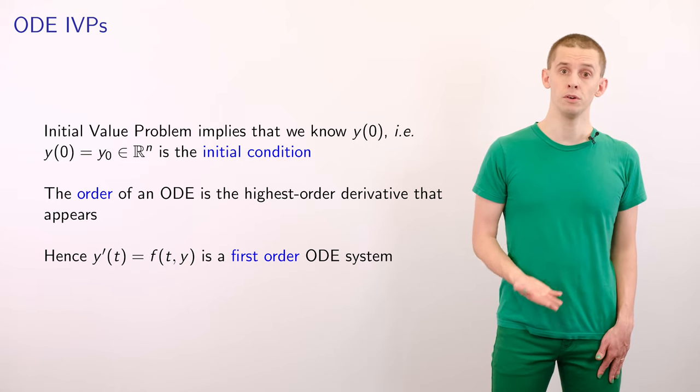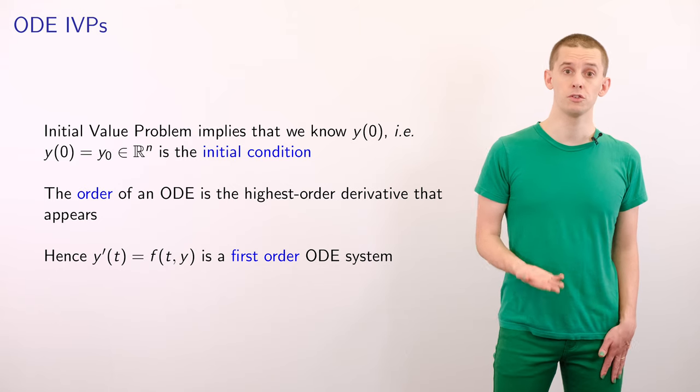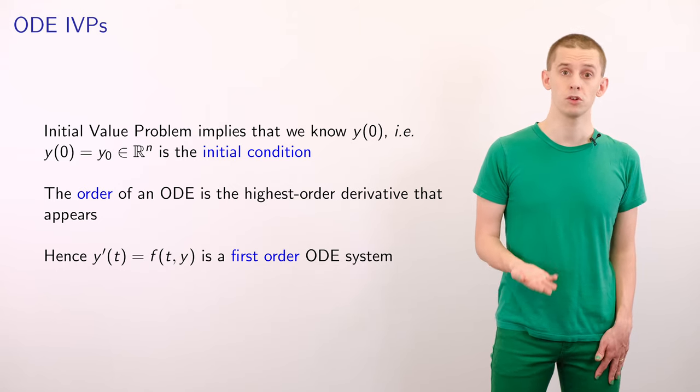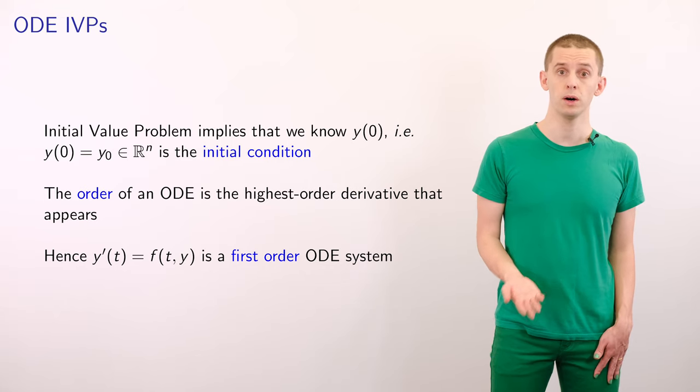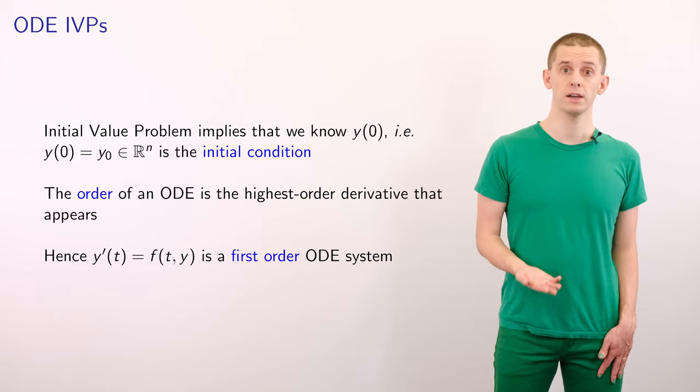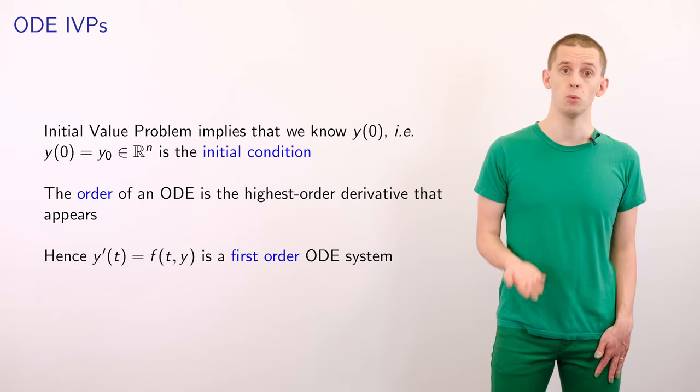The order of an ODE is given by the highest order derivative that appears in the equation. And so here, for this equation, y prime of t is equal to f of t and y, then the order will be 1, because the highest derivative is the y prime.